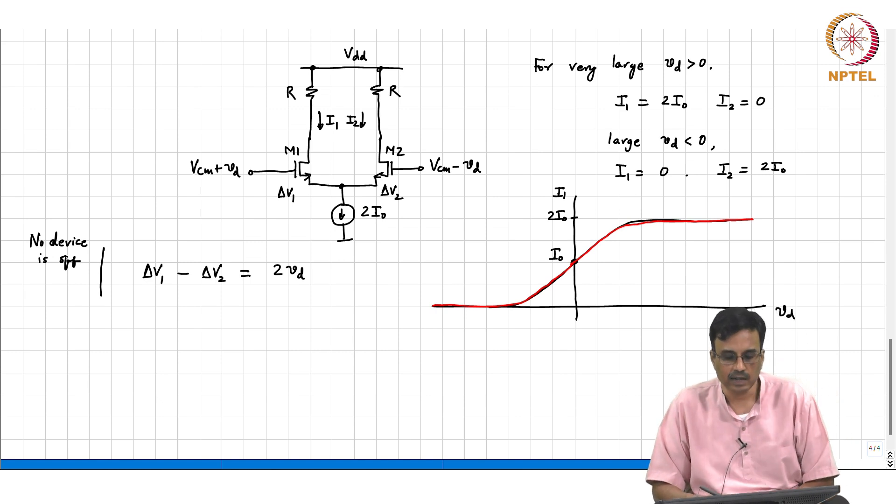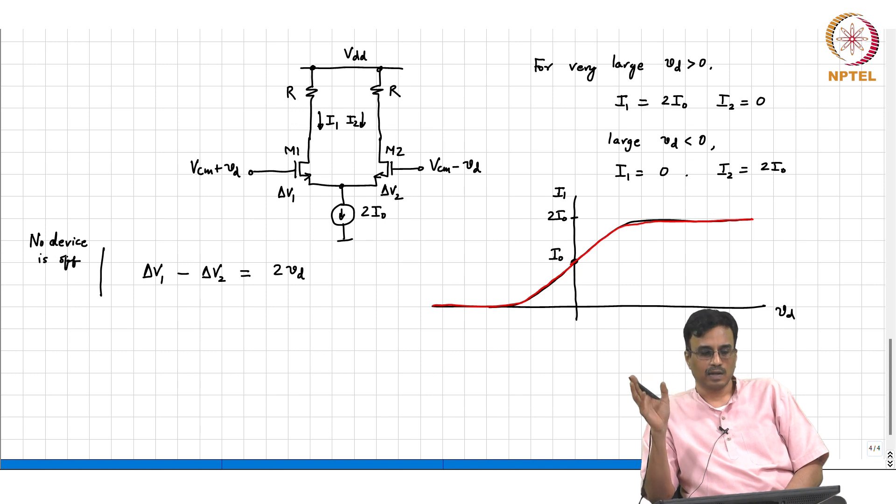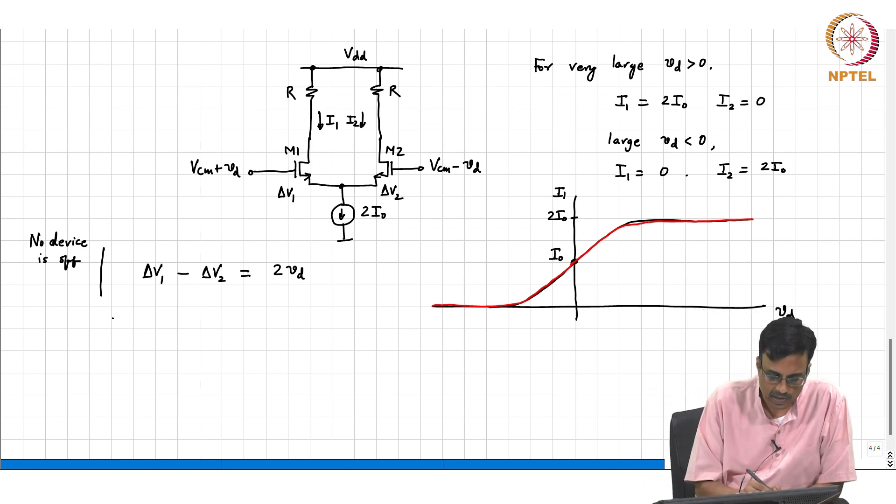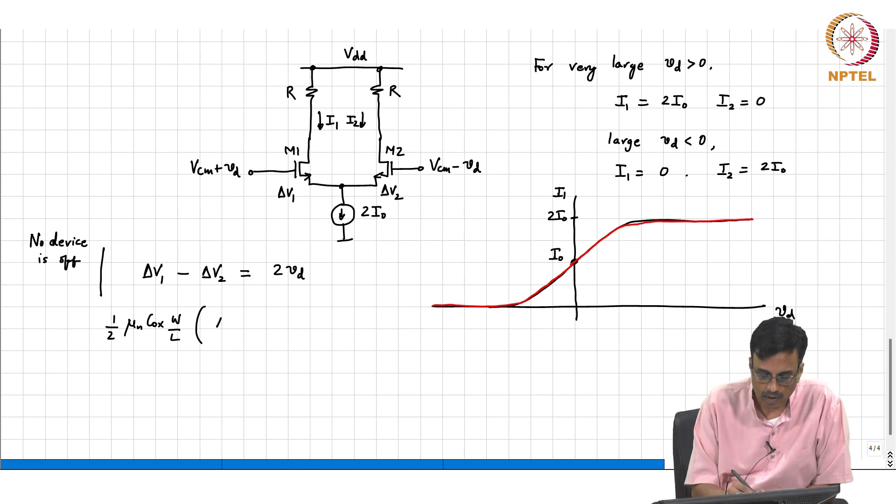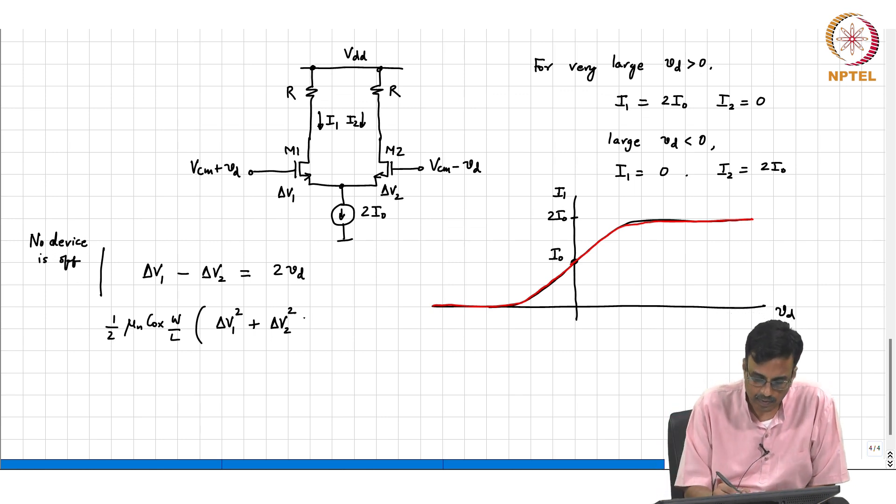What's the other constraint? If you want to find current, you have to find delta V as the overdrives equivalently. We have two overdrives to find, we need two equations. One equation is here, what's the other equation? I1 plus I2 is 2 I naught. So basically it's one half mu n Cox W by L times delta V1 square plus delta V2 square equals 2 I naught.